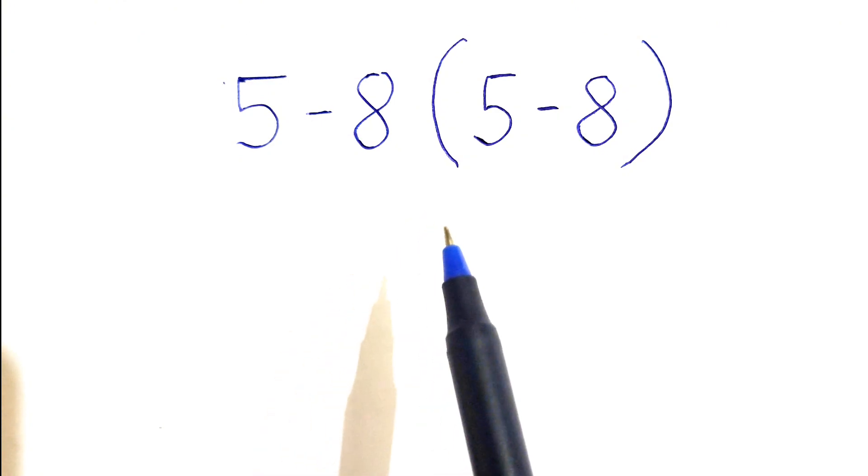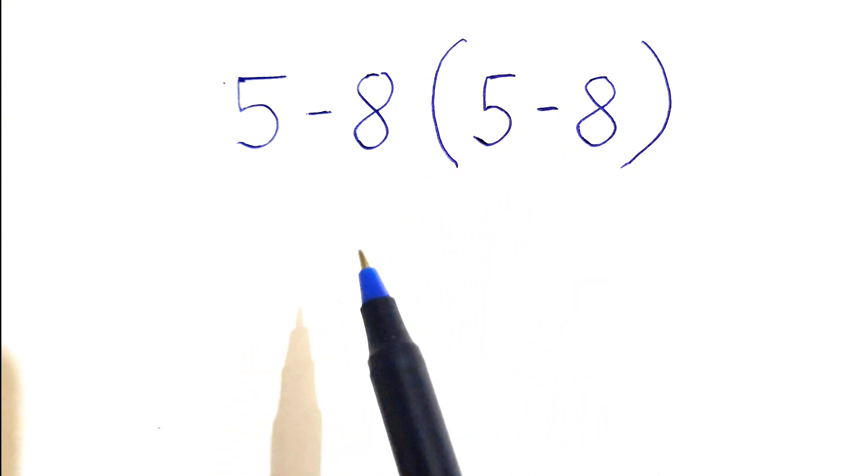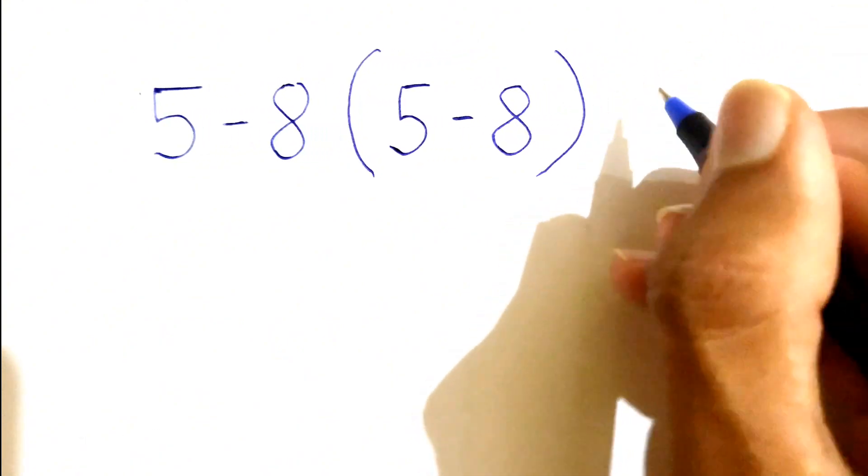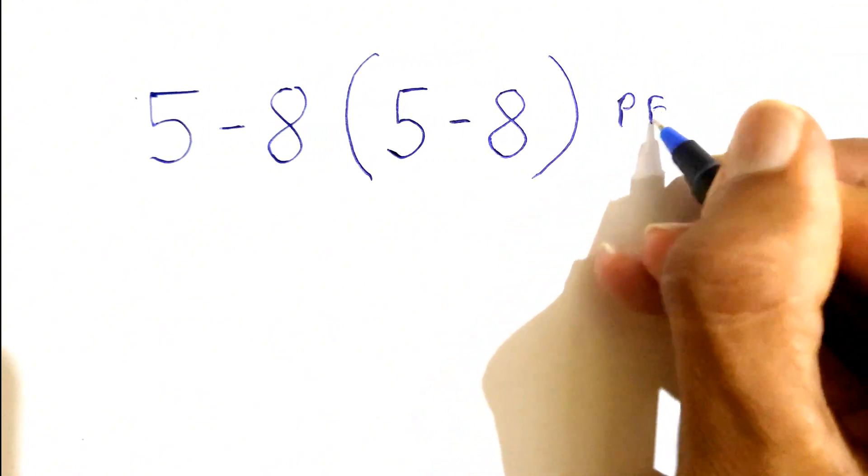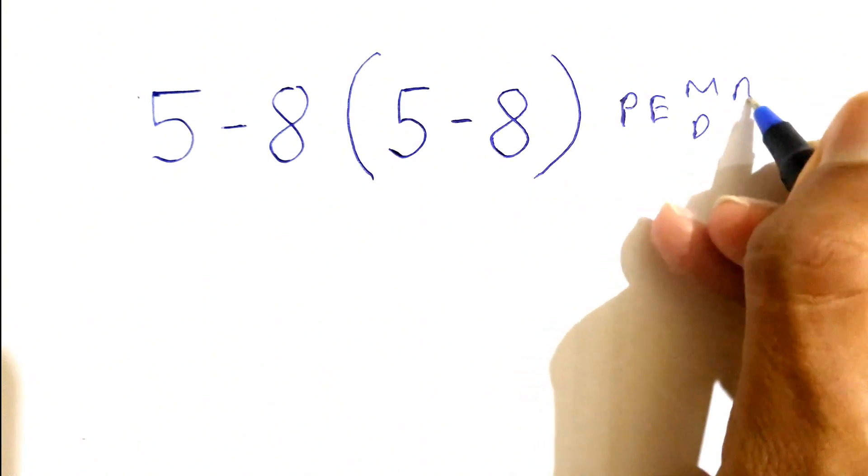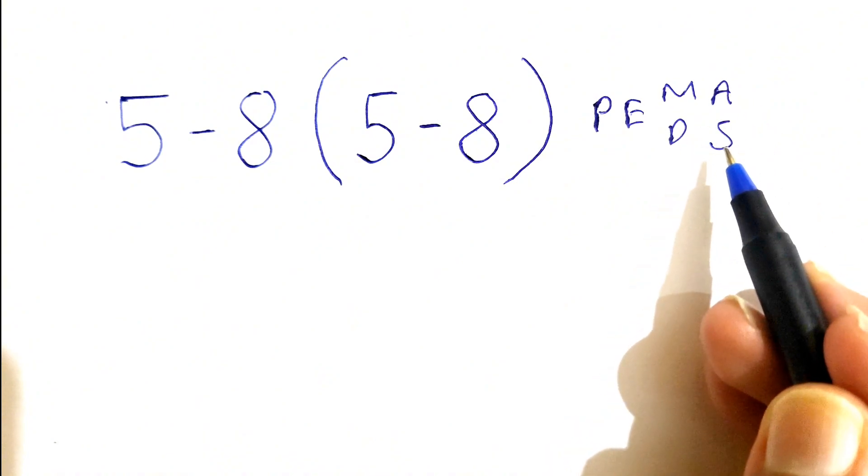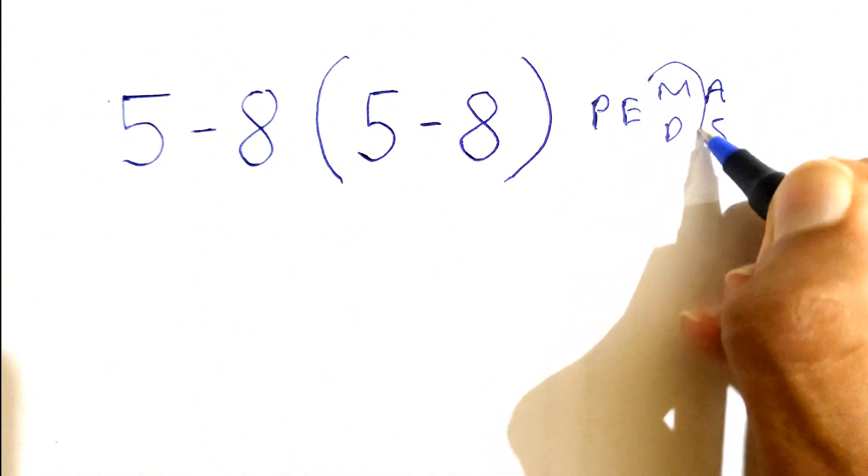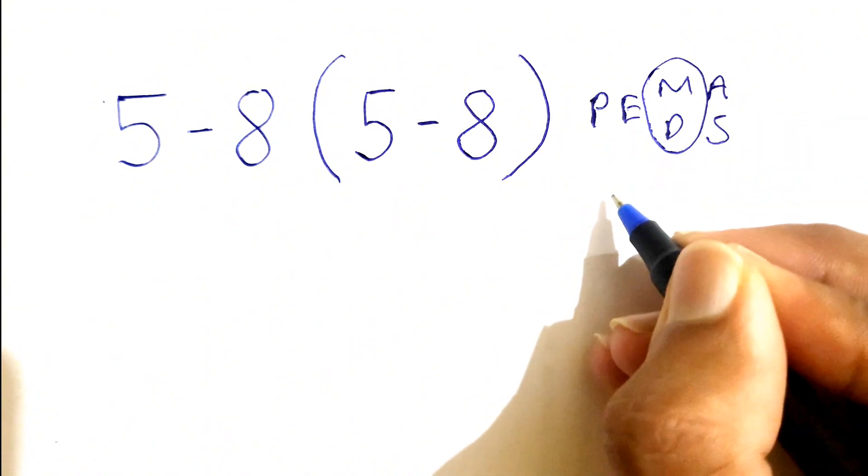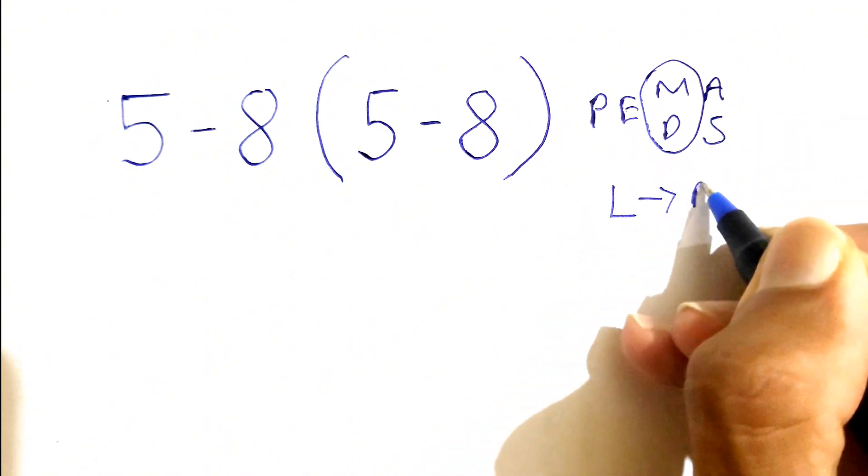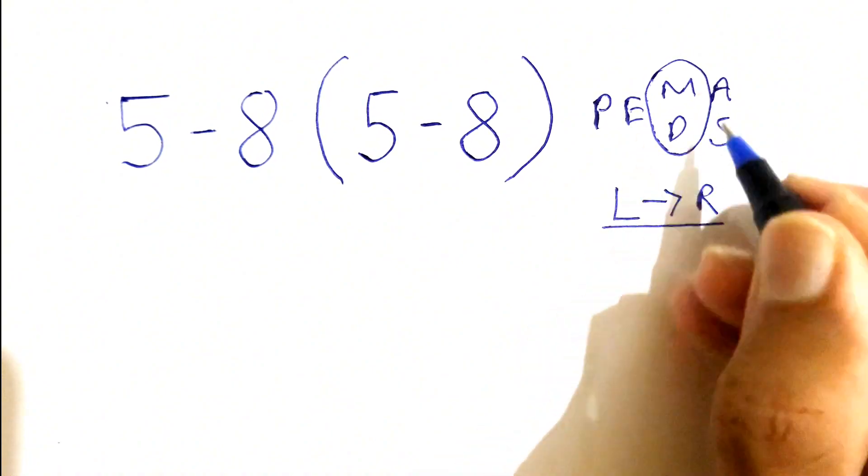For solving this expression, we need to follow the order of operations, also called PEMDAS, which stands for Parentheses, Exponents, Multiplication, Division, Addition, and Subtraction. The priority of multiplication and division is the same, but we go from left to right, whichever comes first. The same applies for addition and subtraction.